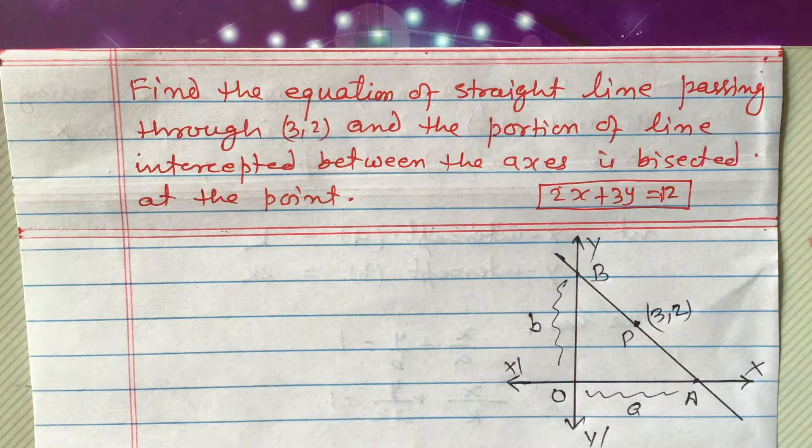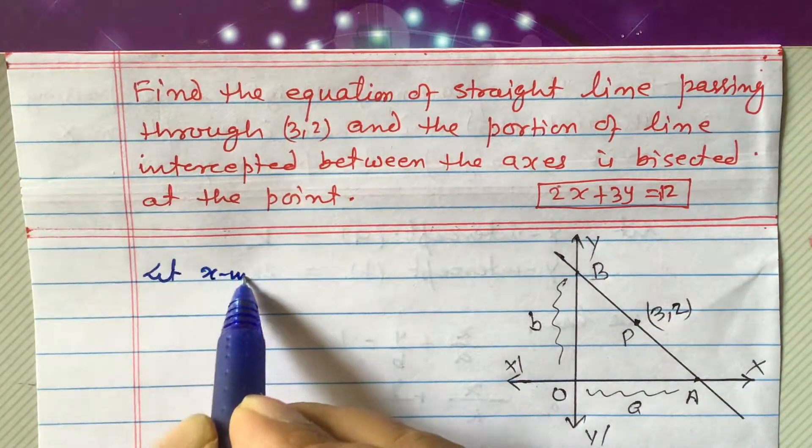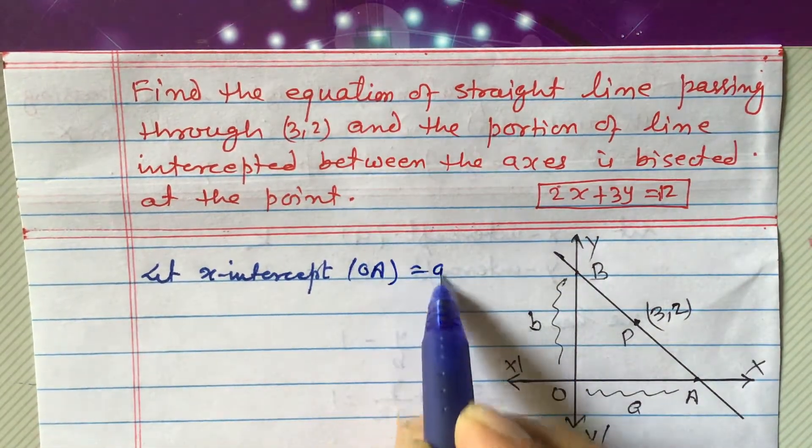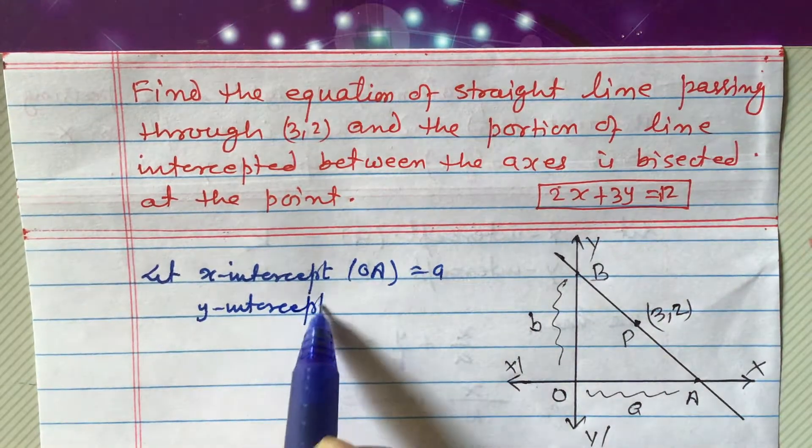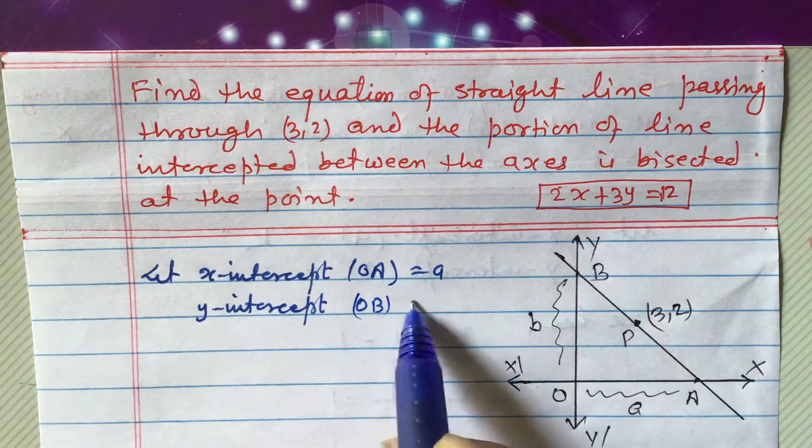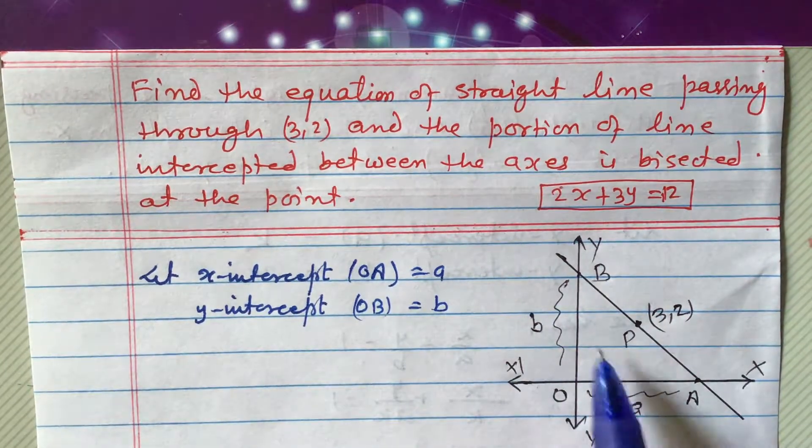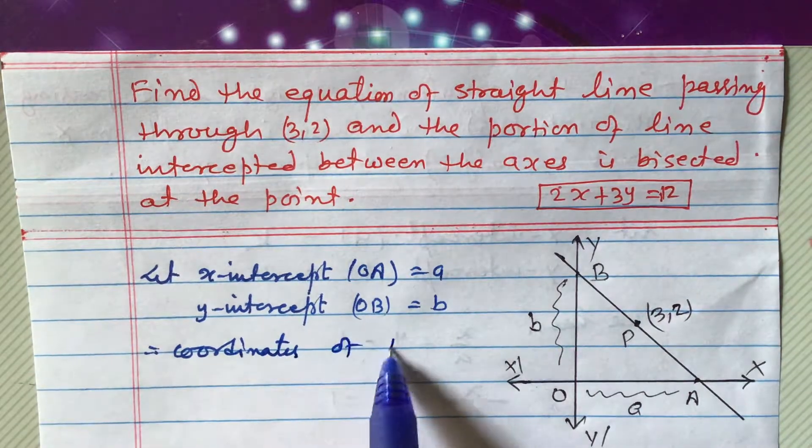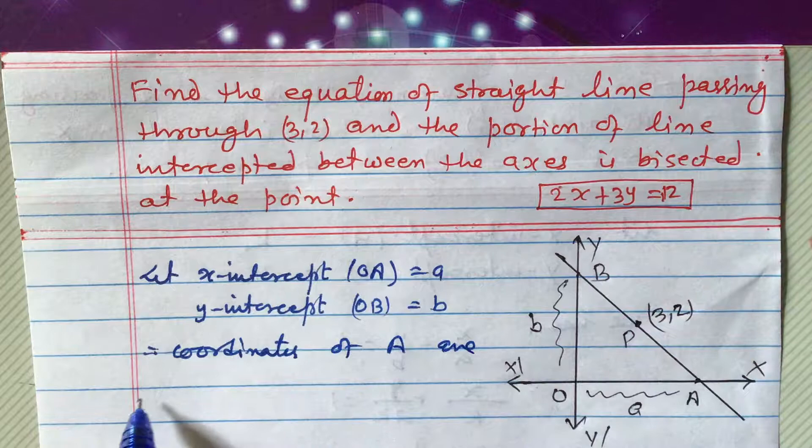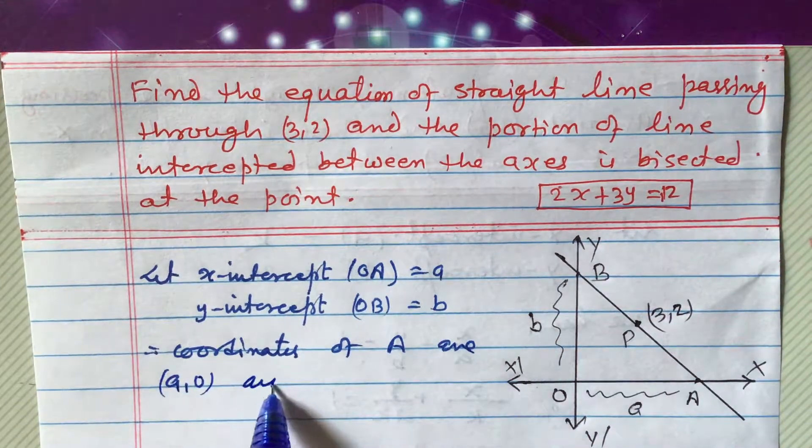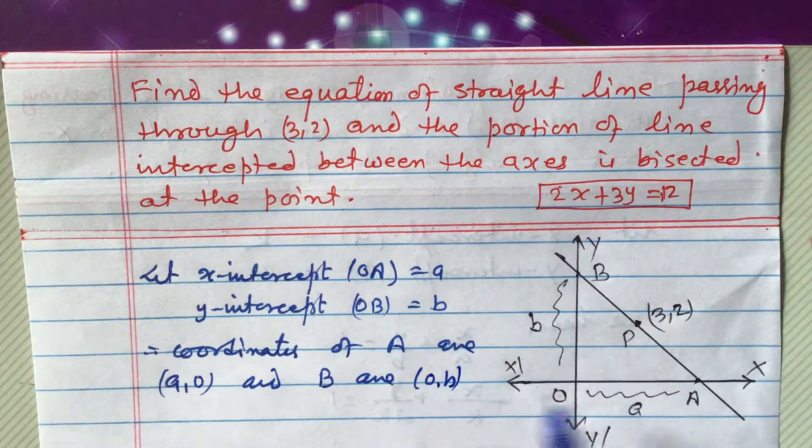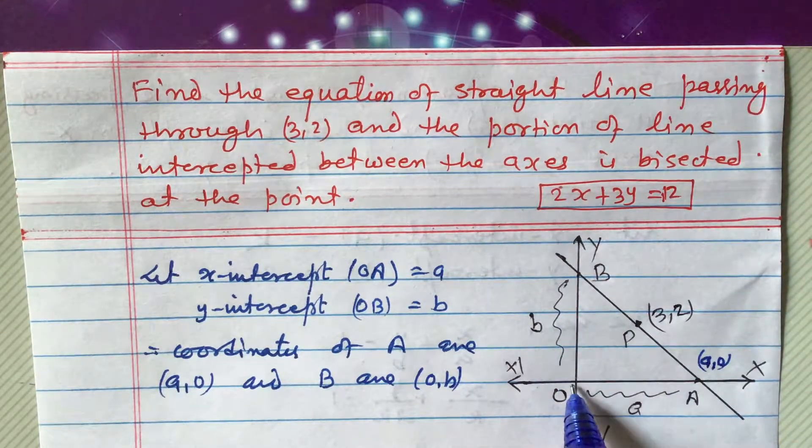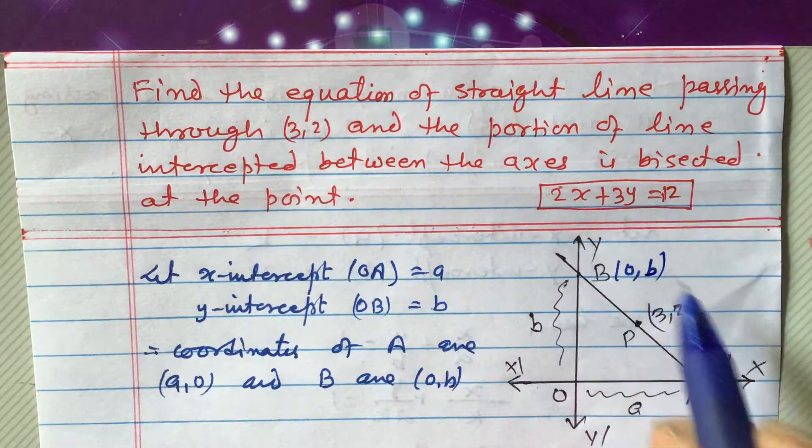Now, after this, what we can do here, let y axis intercept, y axis intercept, suppose this is OA is there. OA equals to A and y intercept OB equals to B, we can consider. So, if you consider this must A and this must B, then therefore coordinates of A are A comma 0 and B are 0 comma B. Since it is A, this is A means this will be A comma 0 and this is B means OX is 0 here, 0 comma this is B, so B.